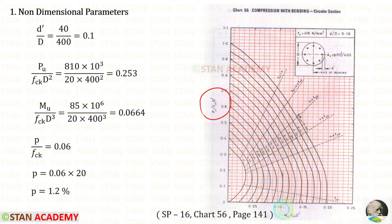From the chart we can find these two terms. For P_u upon f_ck D square we have got 0.253. Here we have 0.2, this one will be 0.22, this one will be 0.24, this one will be 0.26, and this one will be 0.28. 0.253 comes between 0.24 and 0.26, so in between we have to draw a line.